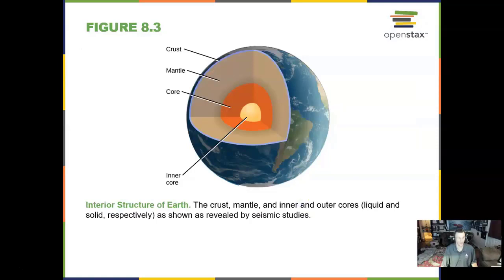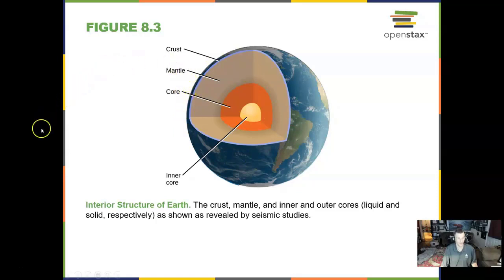The inside of our Earth is believed to have different layers. The least dense layer is at the top. The very dense layer is at the bottom in the middle — so we have a core, and then another core that is a liquid core, which generates our magnetic field. Then we have a thick mantle and a thin crust.